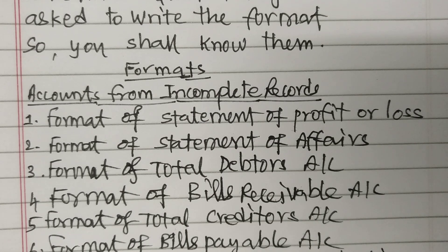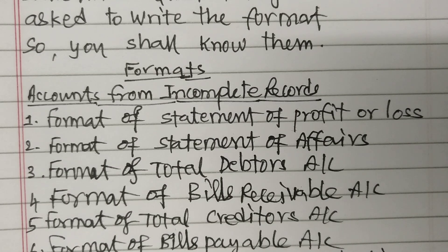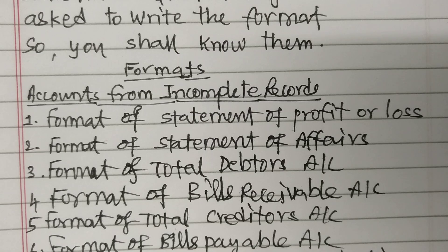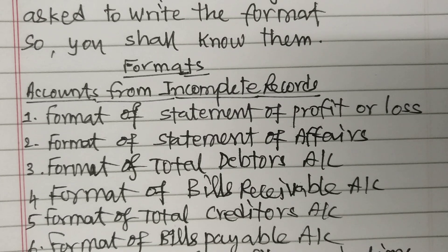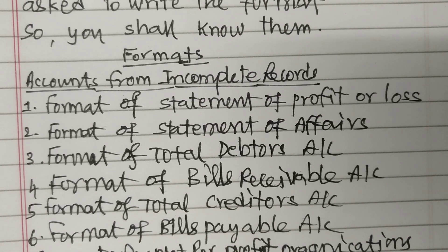The next is the Format of Statement of Affairs. Then, the Format of Total Debtors Account, and the Format of Bills Receivable Account, followed by the Format of Total Creditors Account.